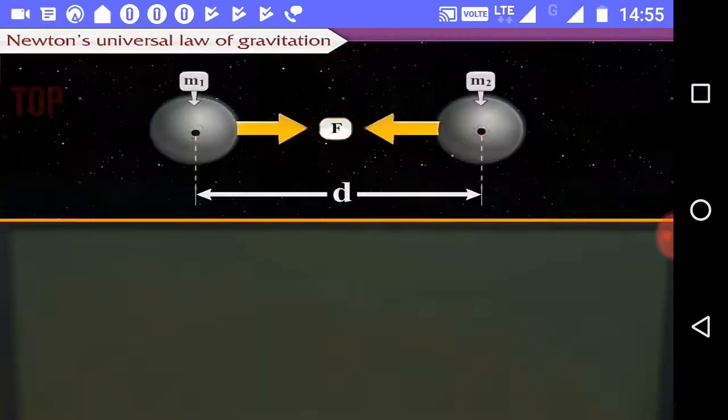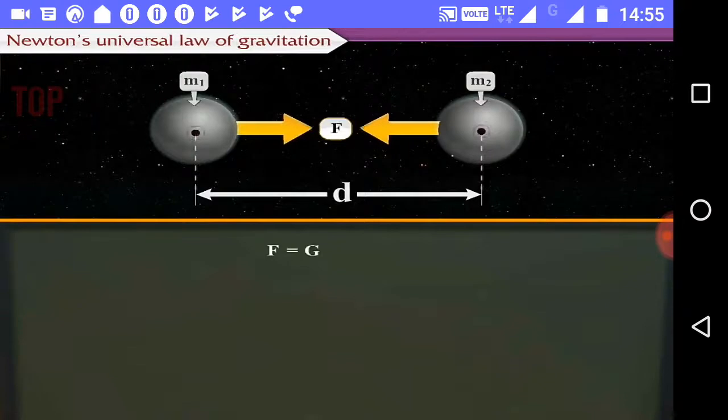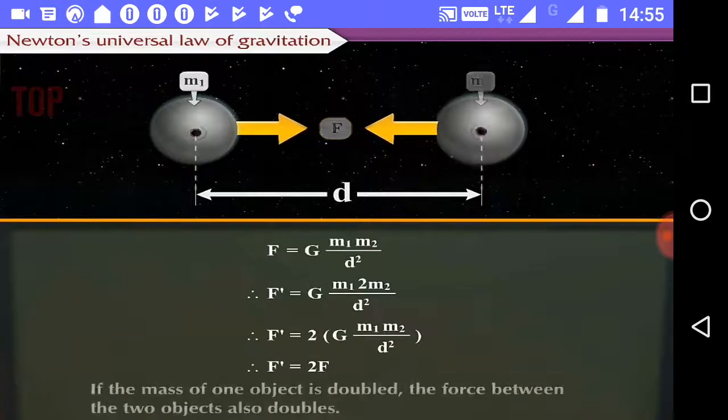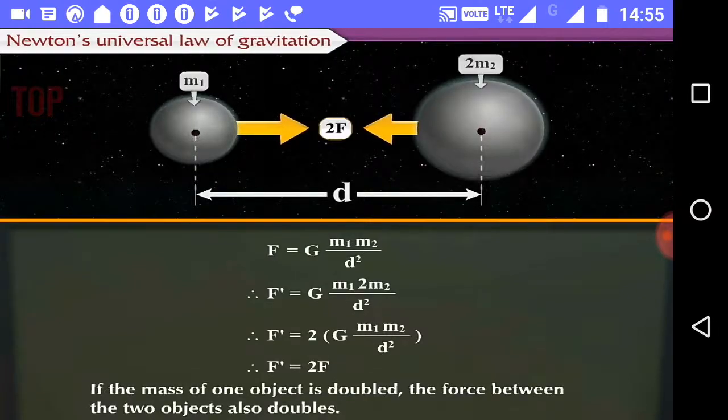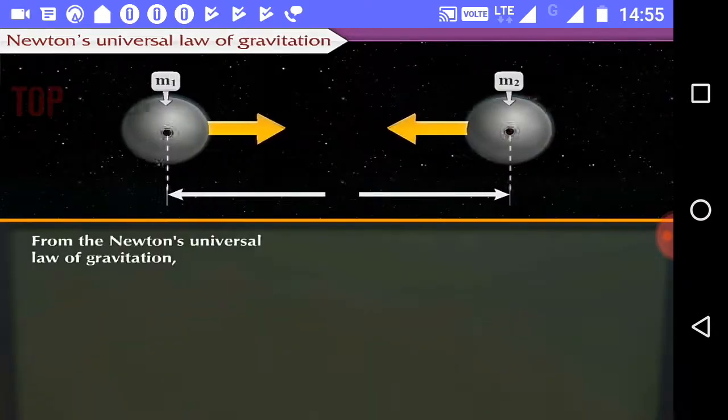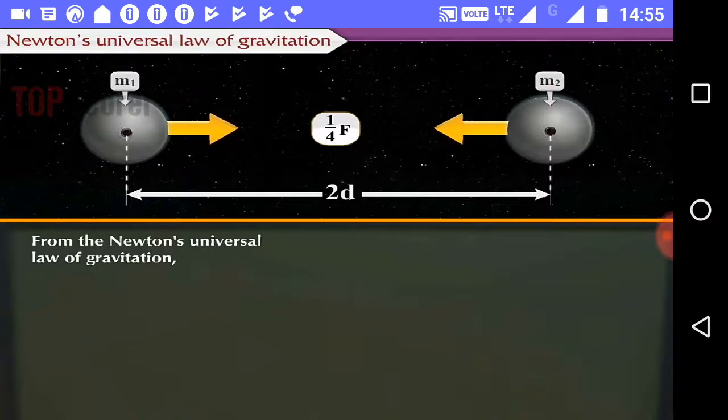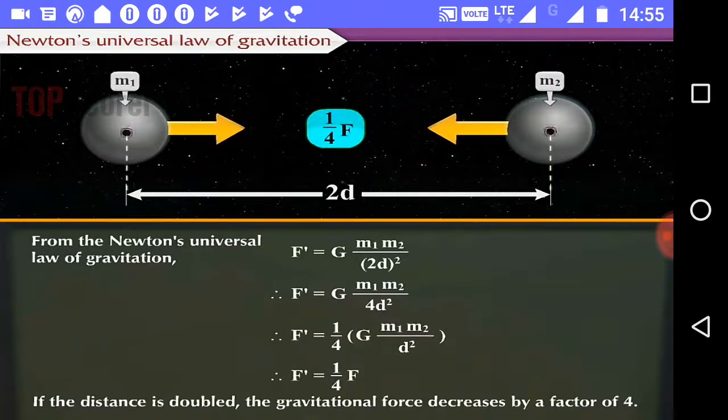From the equation F is equal to G into M1 into M2 upon D square, it is clear that if the mass of one object is doubled, the force between the two objects also doubles. Also, if the distance is doubled, the force decreases by a factor of 4.